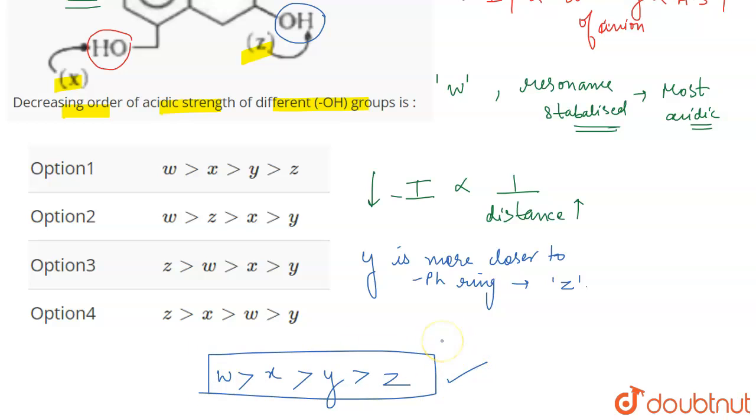So one thing you have to remember, more is the effect of the electron withdrawing group, more is going to be the acidic strength because more will be the stability of the anion formed. So therefore, this is the correct answer. And this is given to you in option number one.